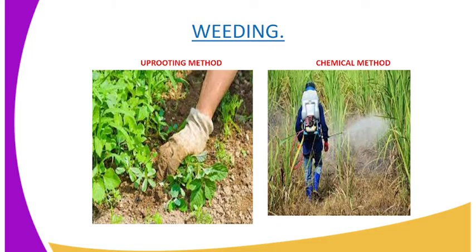You can see there is a farmer here wearing a glove so that he or she can be protected from dangerous species. The second method is the chemical method, where we use chemicals referred to as herbicides. You can also use the biological method, which involves using a living organism.